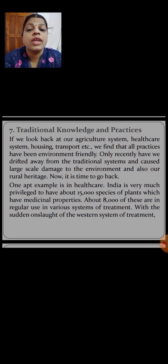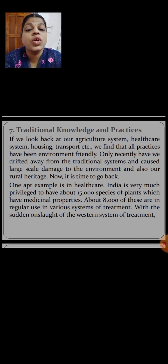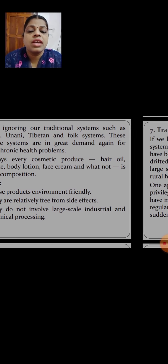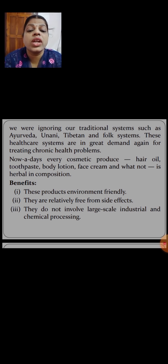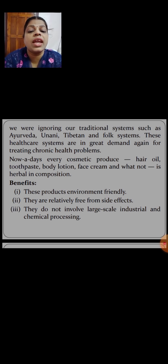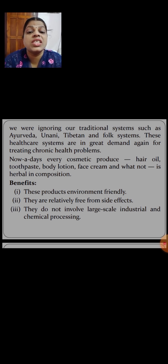India is privileged with more species of plants, and about 8,000 of these are in regular use for various systems of treatment. We have been ignoring our traditional systems such as Ayurveda, Unani, Tibetan, and folk systems. These healthcare systems are in great demand again for treating chronic health problems.